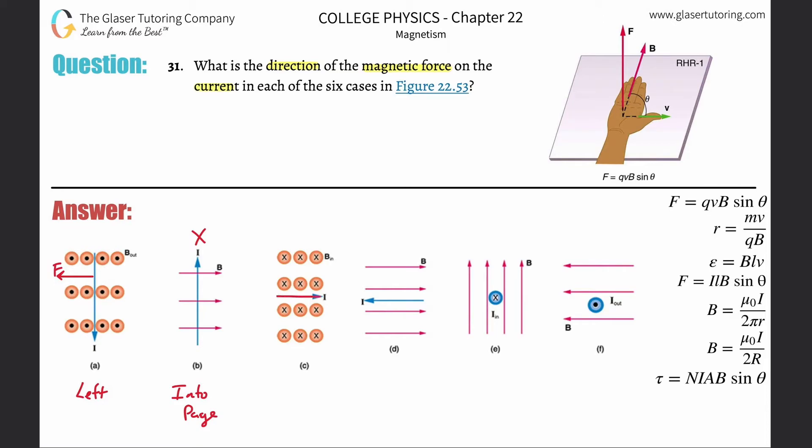Now point your thumb to the right. With your thumb pointing to the right, you have to point your fingers now into the page because your fingers represent the magnetic field. This should look like you're asking for money in letter C. Your palm is facing upwards, so that's the direction of the force. We would just write up.